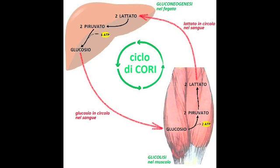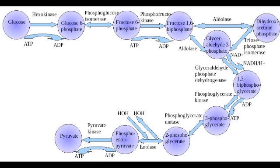One molecule of glucose yields up to two molecules of pyruvate, and this brings a net gain of two molecules of ATP, which is pretty inefficient considering that the normal breakdown of glucose yields about 33 or so molecules of ATP when it's broken down into six molecules of CO2 and water.